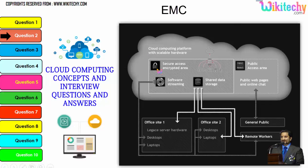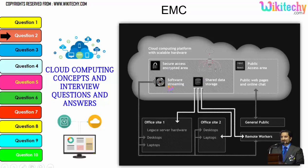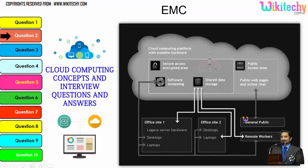Cloud computing has a public access area - public web pages for end users. There is also secure data access, and security is a key aspect of cloud computing. Companies can use a private kind of cloud, and the public can access web pages or websites. This is how cloud computing works.